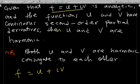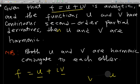and the second-order partial derivatives of both u and v exist and are continuous, then both u and v are harmonic. When u is harmonic, v is a harmonic conjugate of u, and when v is harmonic, u is the harmonic conjugate of v. They are harmonic conjugates of each other. Let's look at an example to understand better.